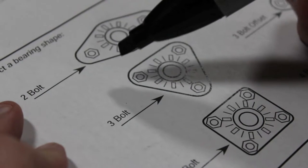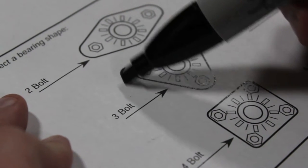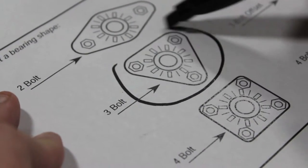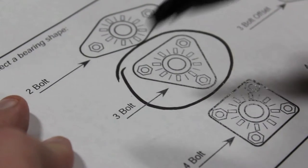Make note of your bolt pattern by circling the appropriate icon on the page. Also make note of any grease fittings. The bearing used in our example doesn't have any, so we'll leave it blank.